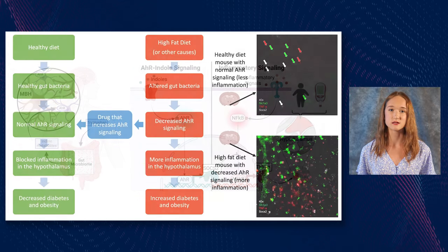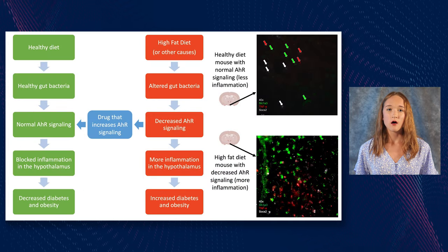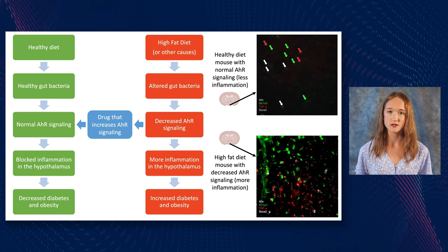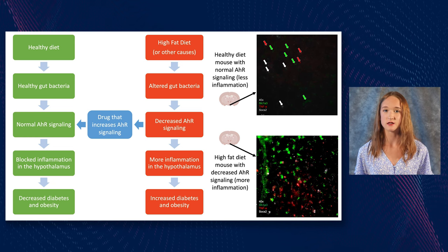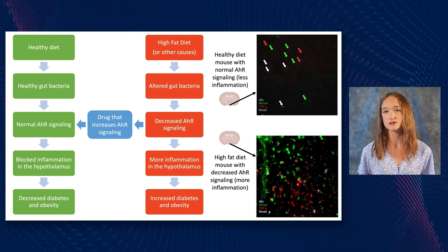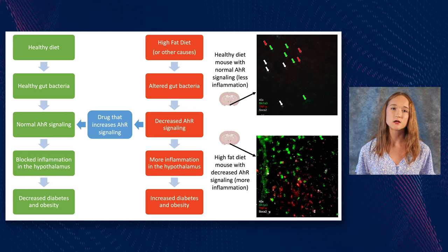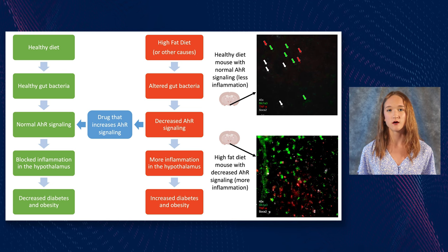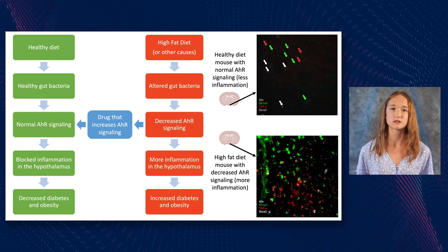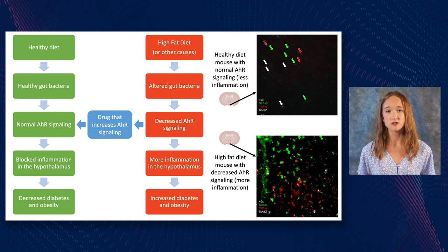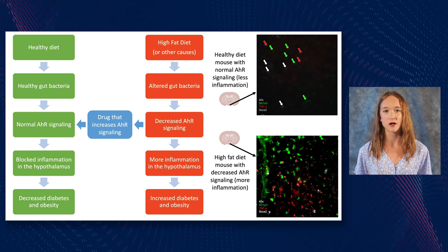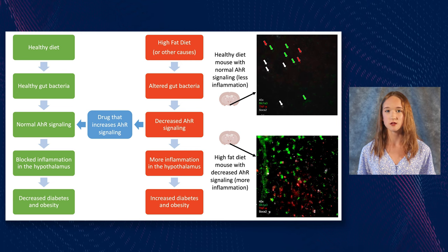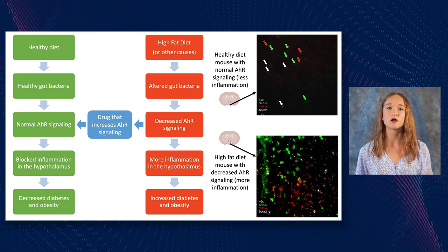My lab hypothesized that the increased rates of diabetes and obesity in high-fat diet fed mice were due to hypothalamic inflammation caused by reductions in indole-AHR signaling. To confirm this hypothesis, I used immunofluorescence to locate AHR in the brain, and then I used RNA scope to compare the inflammation levels of control and high-fat diet fed mice. The increased red signaling in the high-fat diet mouse confirms that a high-fat diet does increase hypothalamic inflammation, and we determined it affects both neurons and non-neuronal cells.